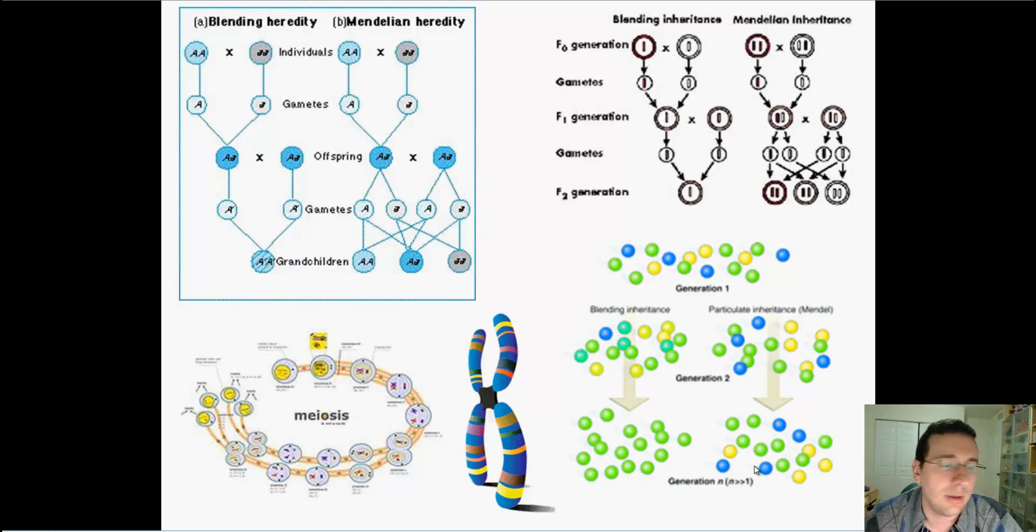We learned in the previous chapter that this whole process happens through meiosis. And because of the separation of homologues and crossing over, variation is maintained across generations. And genes stored in the chromosome, which is featured in the middle, are passed on from generation to generation. Now, the people who first understood and studied this didn't know about all this genetic of the chromosome and meiosis and all this stuff.